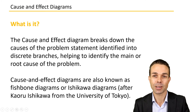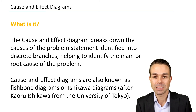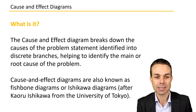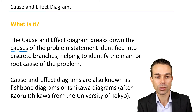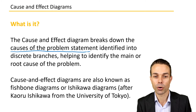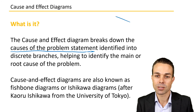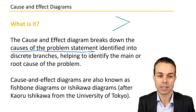Now what is a cause and effect diagram? Basically it breaks down the causes of a problem or a problem statement which has been identified, and it breaks it down into discrete branches.